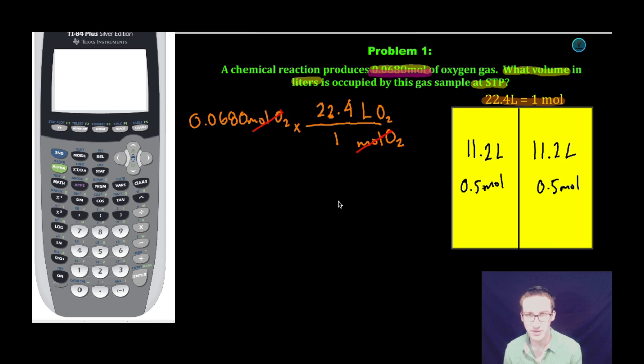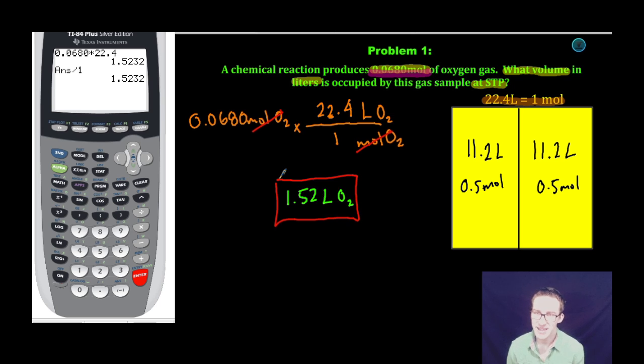Now just a quick jump over to our calculator. 0.0680 times 22.4 equals...using the correct number of significant figures, I end up with 1.52 liters of oxygen gas. Again, ask yourself if this makes sense. If I know that 22.4 liters is 1 mole and I only have 0.0680 moles, I must have less than 22.4 liters. So this makes sense and we're done.